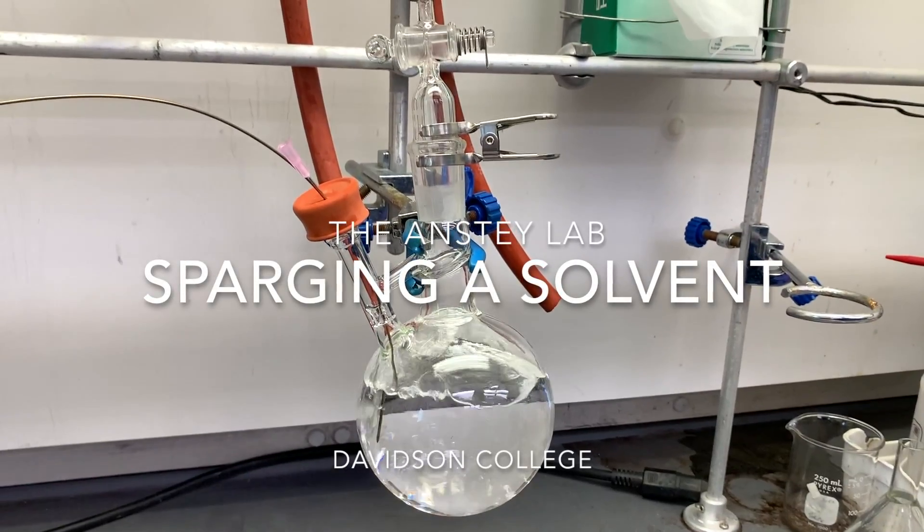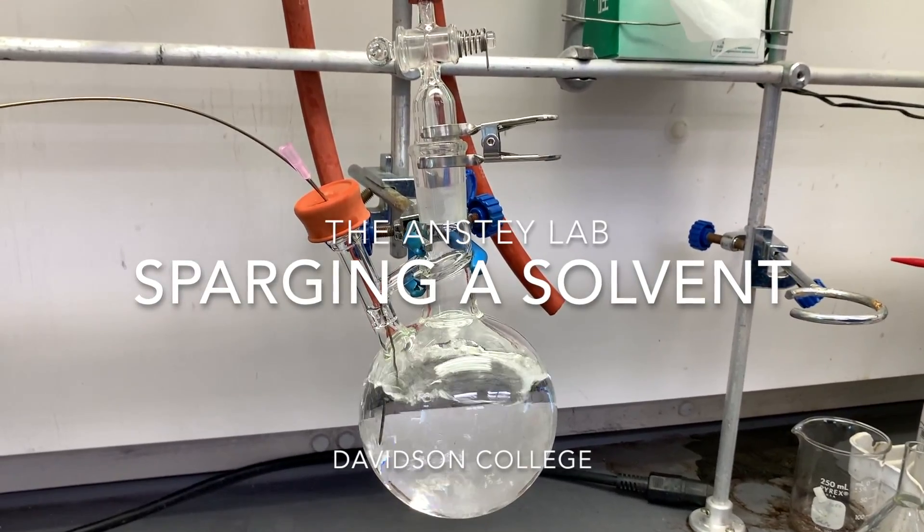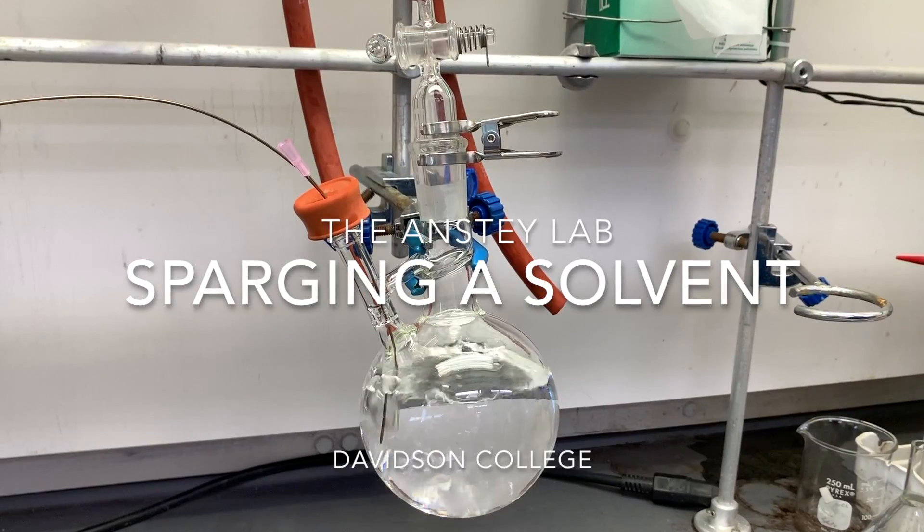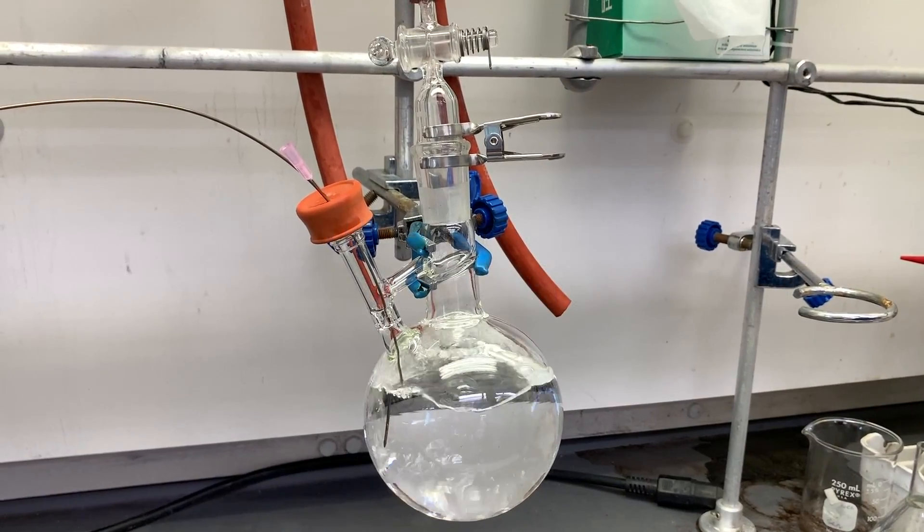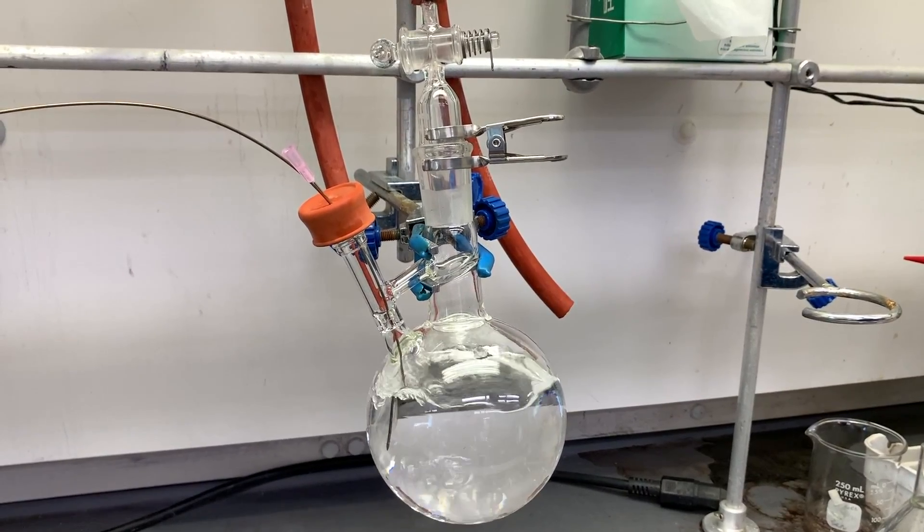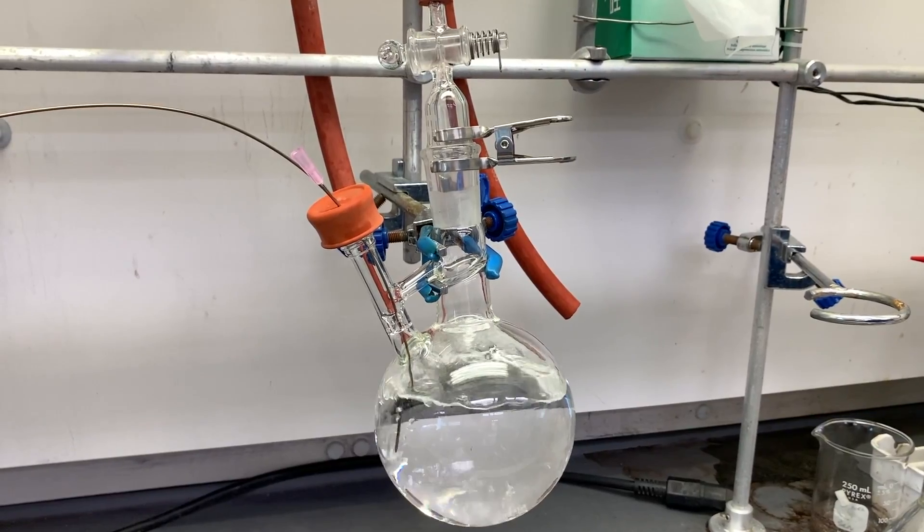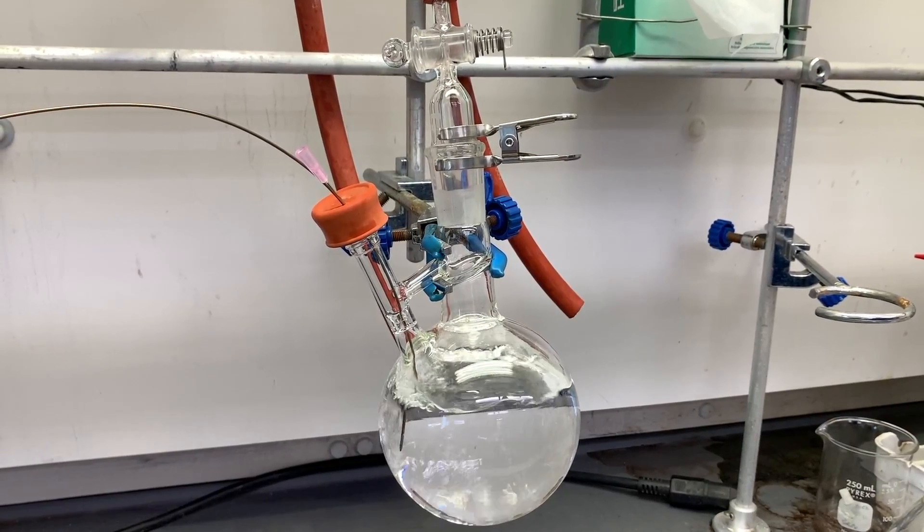Sparging your solvent! Working in an anaerobic environment like the one we have on a Schlenk manifold or in a glove box means that molecular oxygen dissolved in liquids has to be removed before we can use them. The most straightforward technique to do so is called sparging.